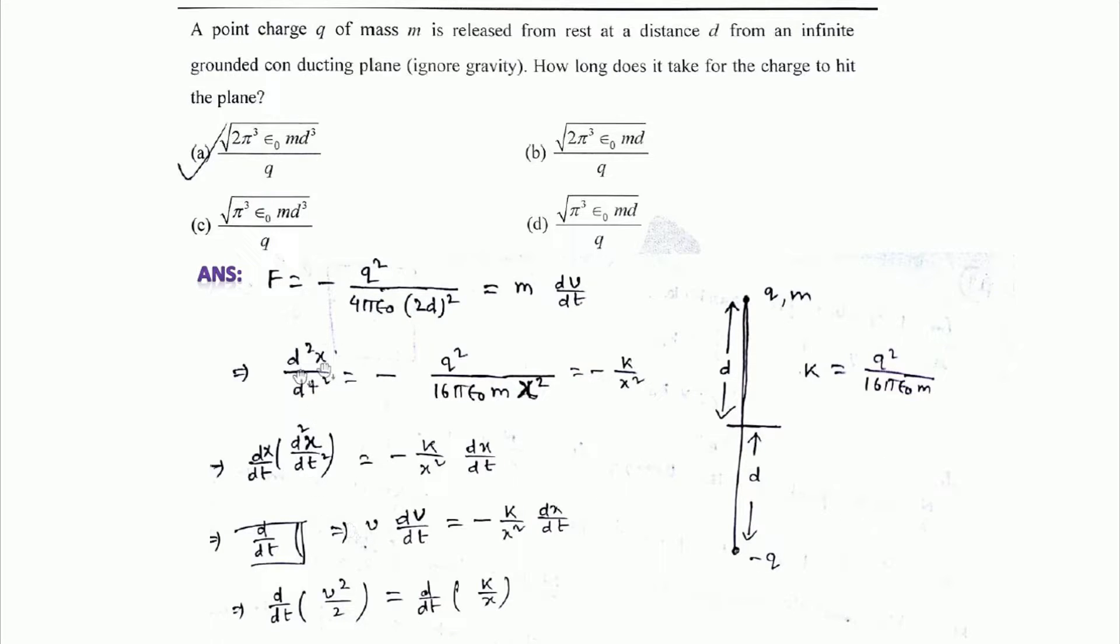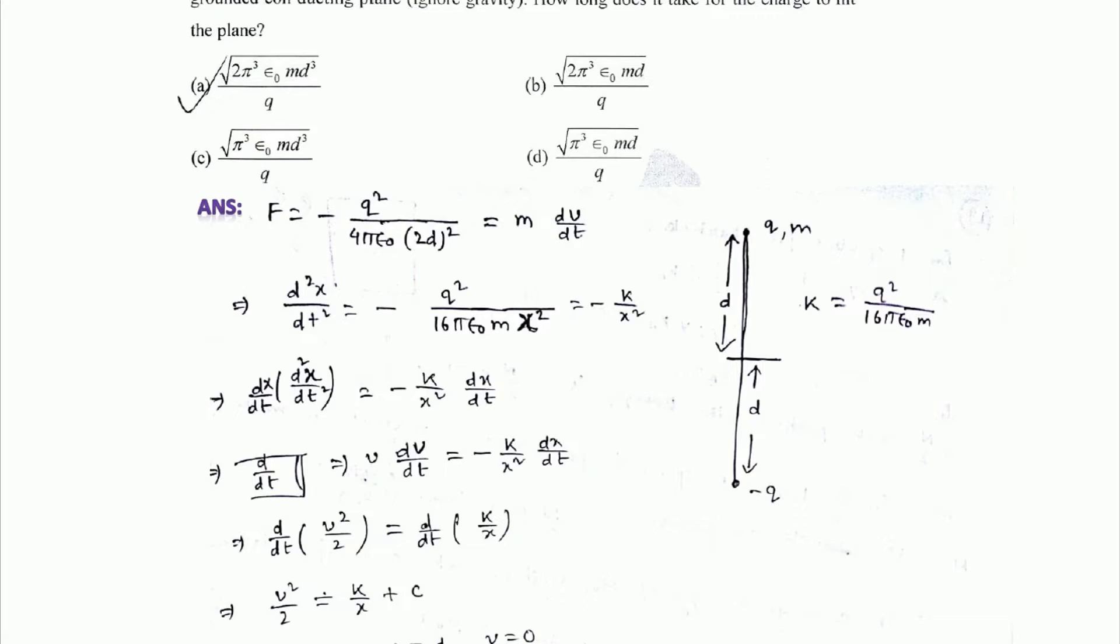d²x/dt² equals minus k/x². What we are doing is multiplying both sides with dx/dt. Upon multiplying by dx/dt, it becomes v dv/dt equals minus k/x² times dx/dt.